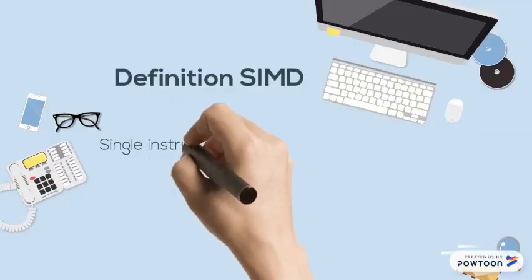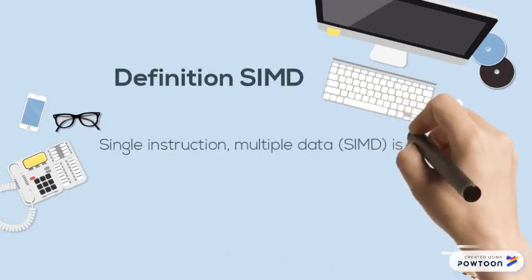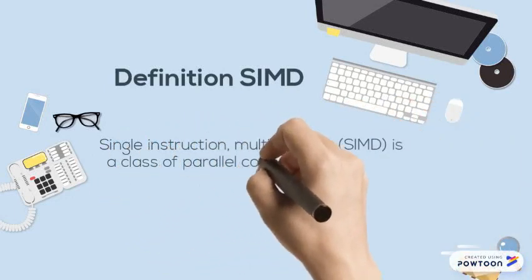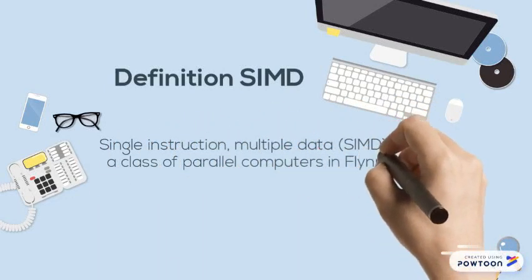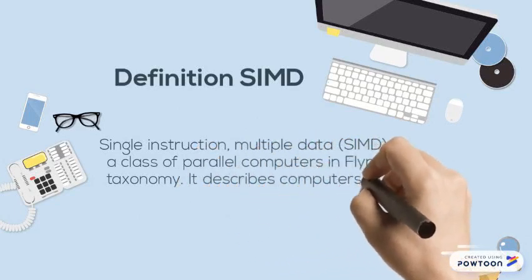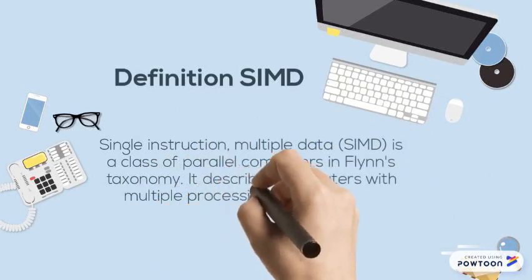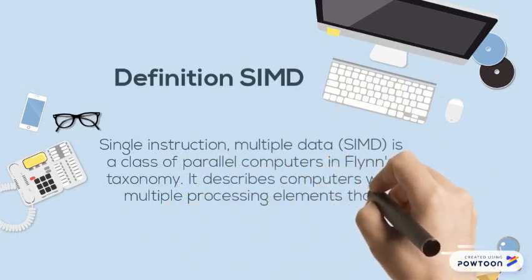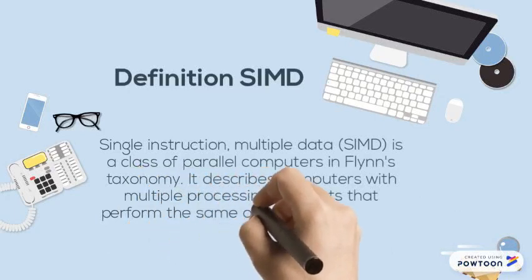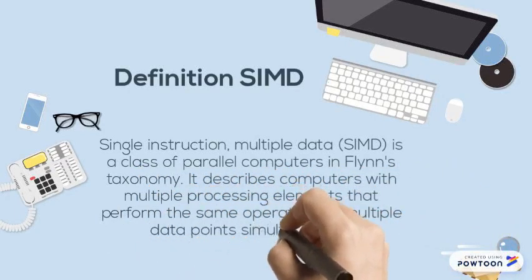Single instruction multiple data, or SIMD, is a class of parallel computers in Flynn's taxonomy. It describes computers with multiple processing elements that perform the same operation on multiple data points simultaneously.